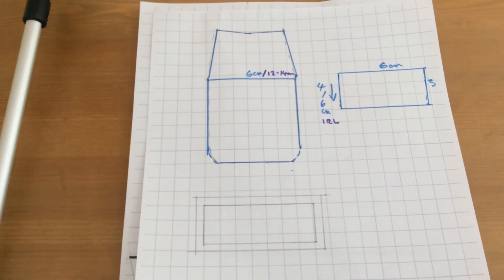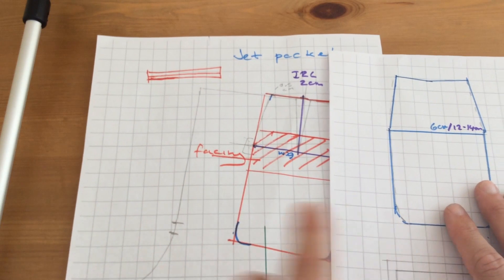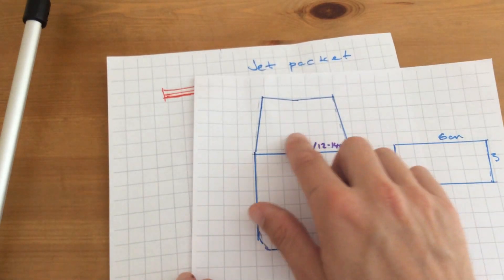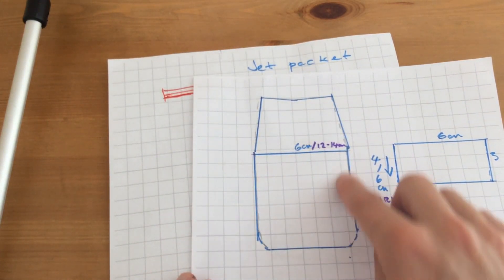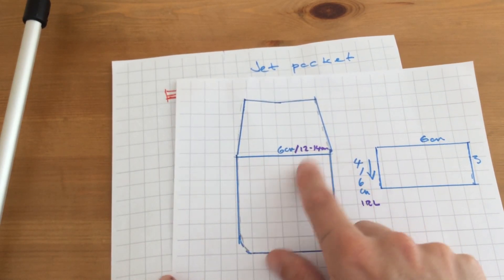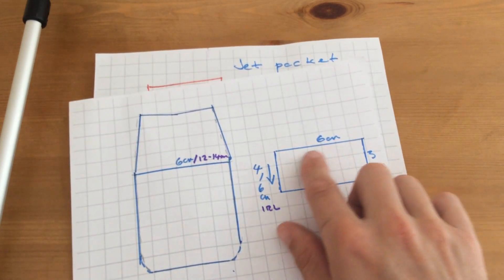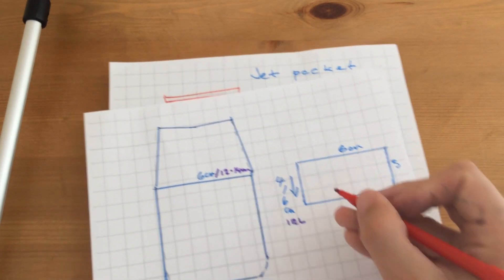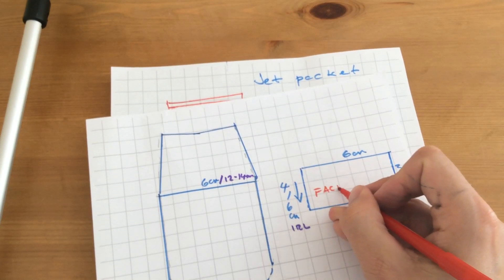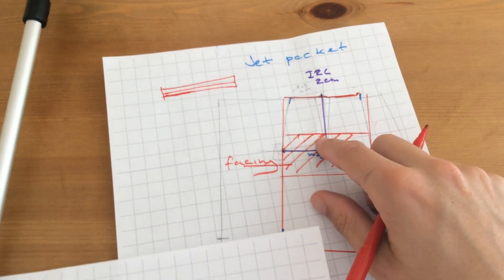So when we look at the pattern pieces for this, this represents this shape. At the moment it's without any kind of seam allowance or extra, and that line there denotes where the jet is going to go. And this piece here is the facing, so it represents this piece here.